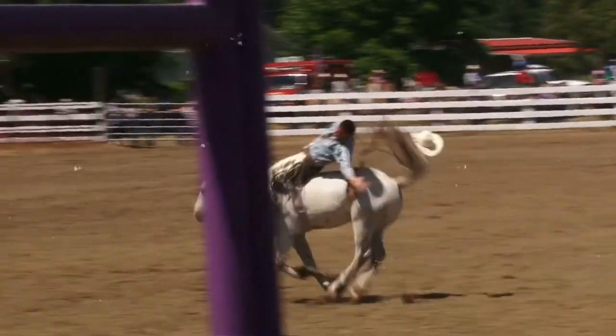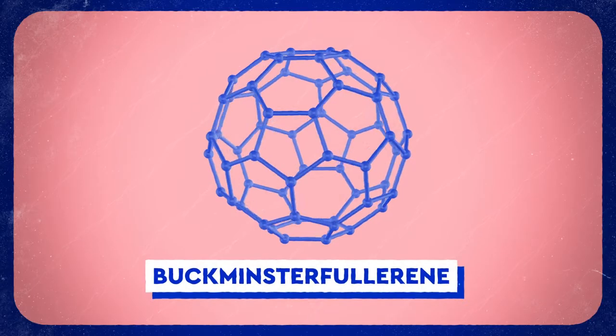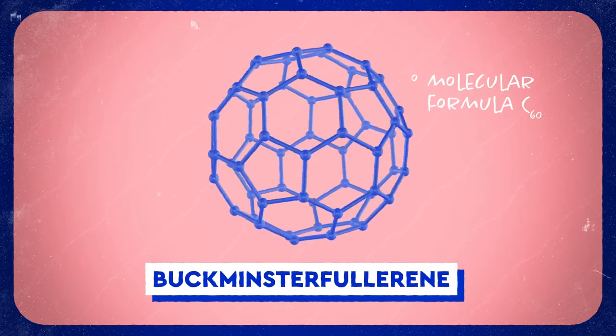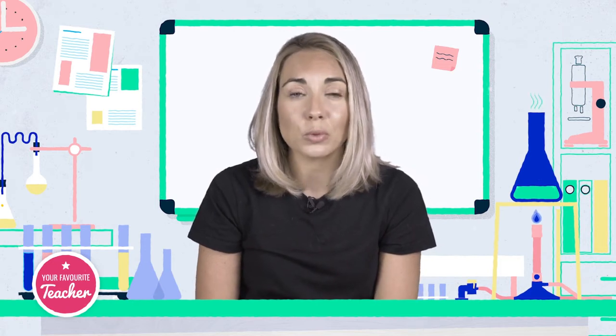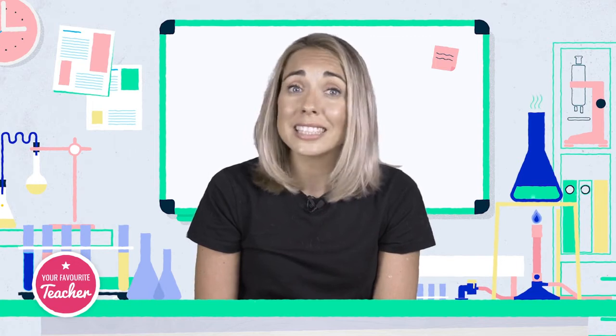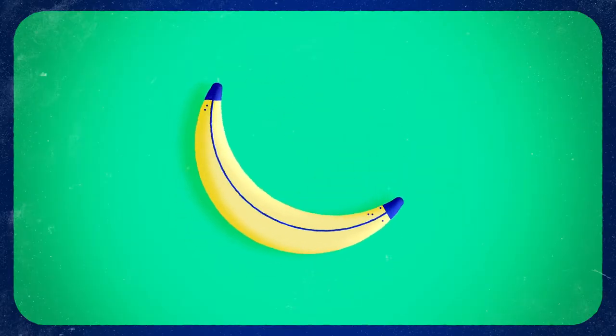Buckminster fullerene, or buckyball, is a spherical molecule with the molecular formula C60, and there are weak intermolecular forces between individual buckyballs holding them together. It has a low melting and boiling point as less energy is required to overcome the weak intermolecular forces. The round shape of the molecules makes the material very slippery.